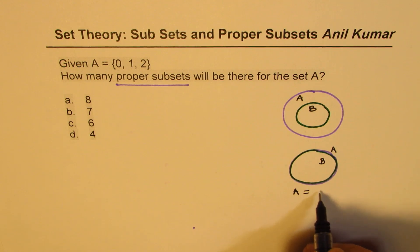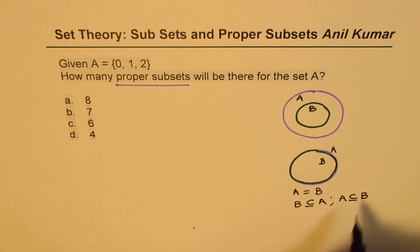So we say set A is equal to set B. Now in this case we know B is subset of A and we also know that A is subset of B. Now this symbol here is subset.